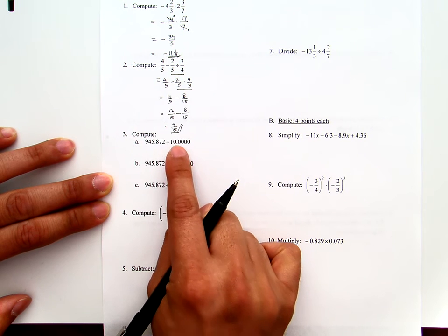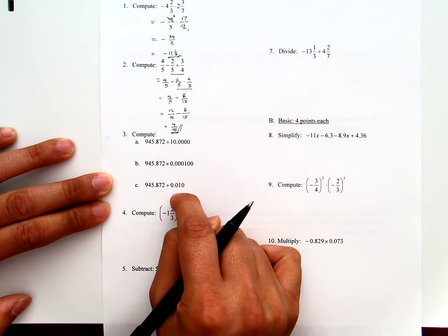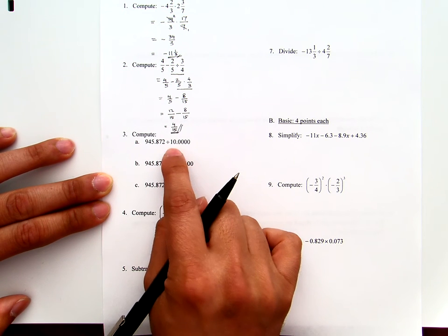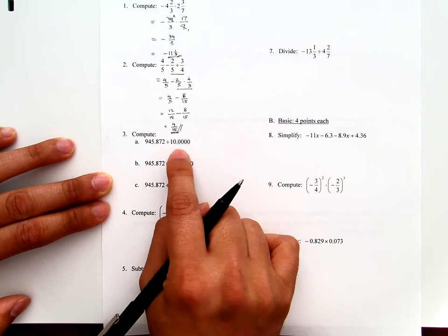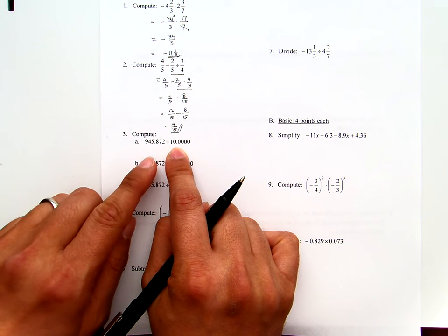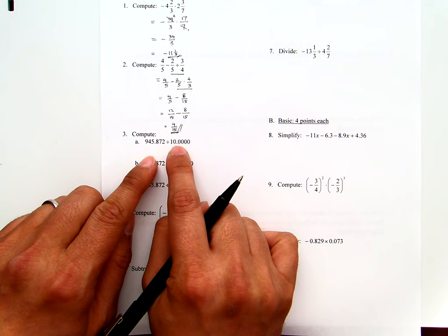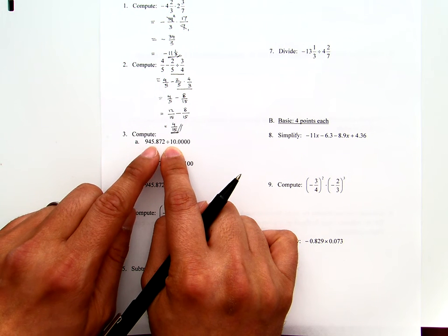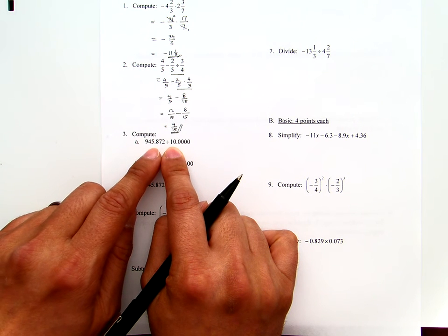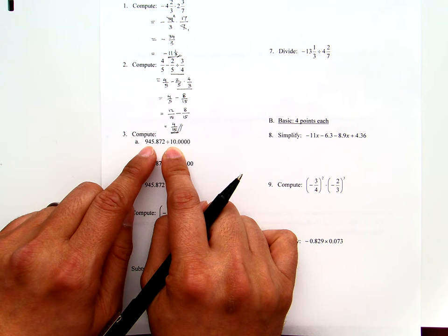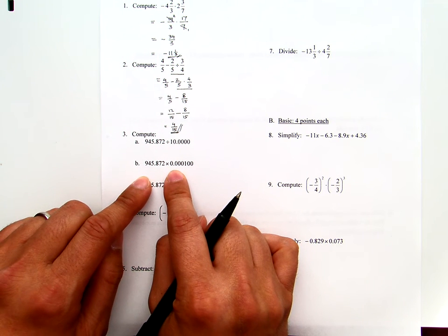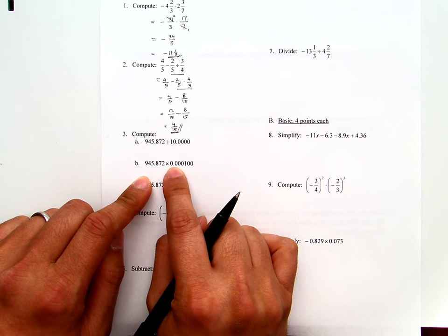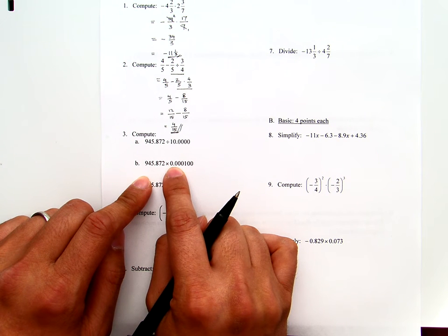Second, when you divide, the decimal points move in the same direction. So later on, when I move, I need to make this one. I move the decimal point once to the left, and therefore the decimal point here also moves once to the left. When we multiply, we move in opposite directions.